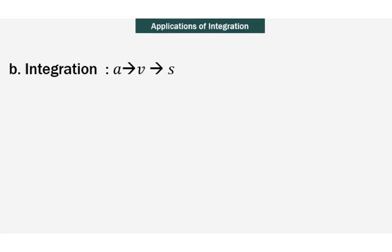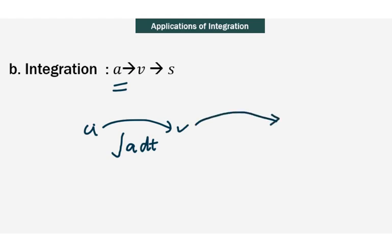Next, let's look at integration. Conversely, if a particle moves in a straight line where the acceleration is given by a, we will be able to get the equation of velocity by integration of the acceleration with respect to t. Continuing with that, if you are given the velocity equation, to get the displacement, all you need to do is integration of the velocity with respect to time.